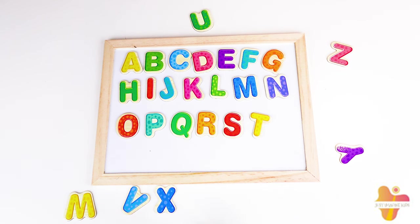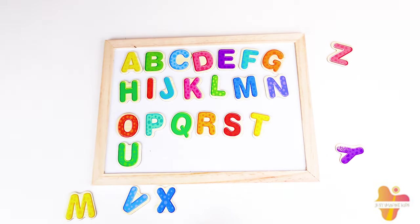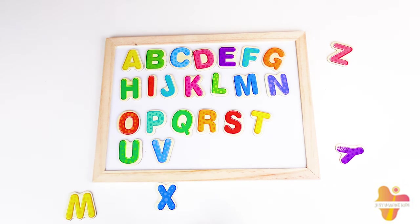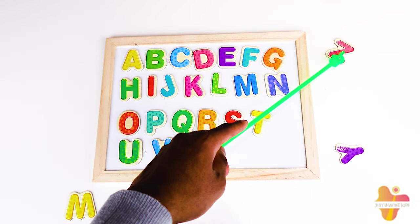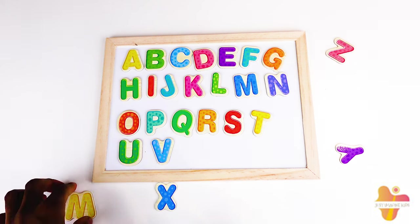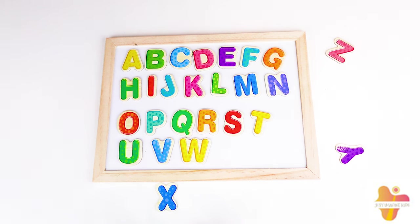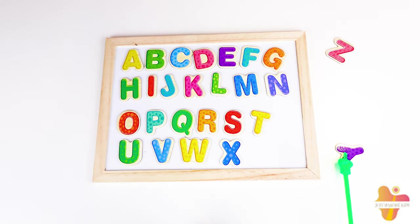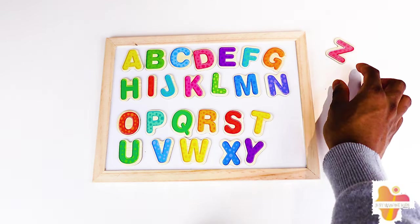And next we need Big U. And then we have Big V. Is the next one Z? No. Is it Big Z? No, it's Big W! And now we have Big X. Big Y. And Big Z.